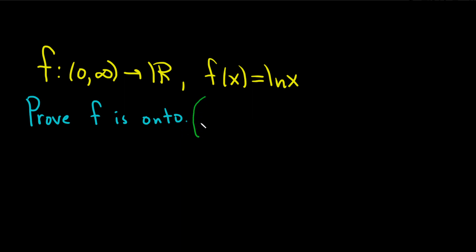So another word for onto is surjective. So we need the definition of onto. Recall a function f from A to B, where A is the domain and B is the co-domain, is onto if...